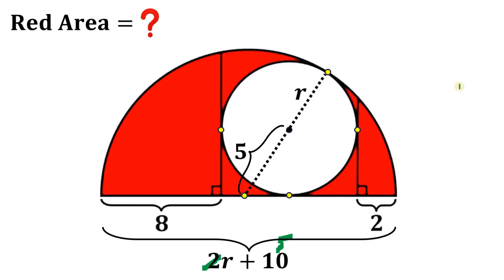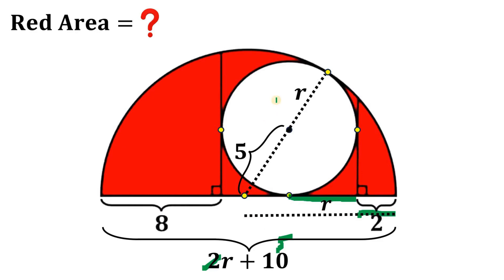This segment is r plus 5. Now we will use again the length of the radius of the semicircle. If we draw the radius like this, this is 2 units — we know that. From the point of tangency to this part, the length is the radius of this circle, so this is r. We know this radius is r plus 5, and we have r plus 2, therefore this segment right over here simply equals 3. So the radius is r plus 5.